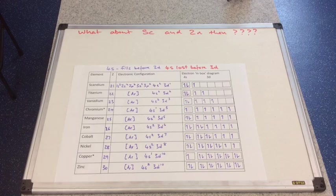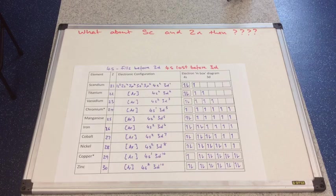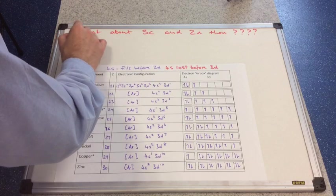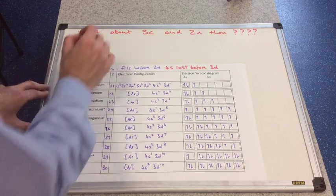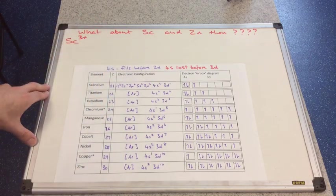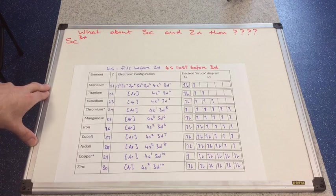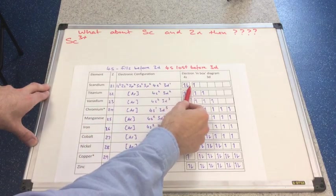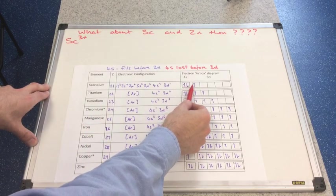So getting back to the start of the video, what about scandium and zinc then? Are they transition elements or not? Well, we need to know that scandium only forms 3+ ions. So what would be the electronic configuration of scandium 3+? So it's going to lose these three electrons, isn't it? It's going to lose those first, then that one.